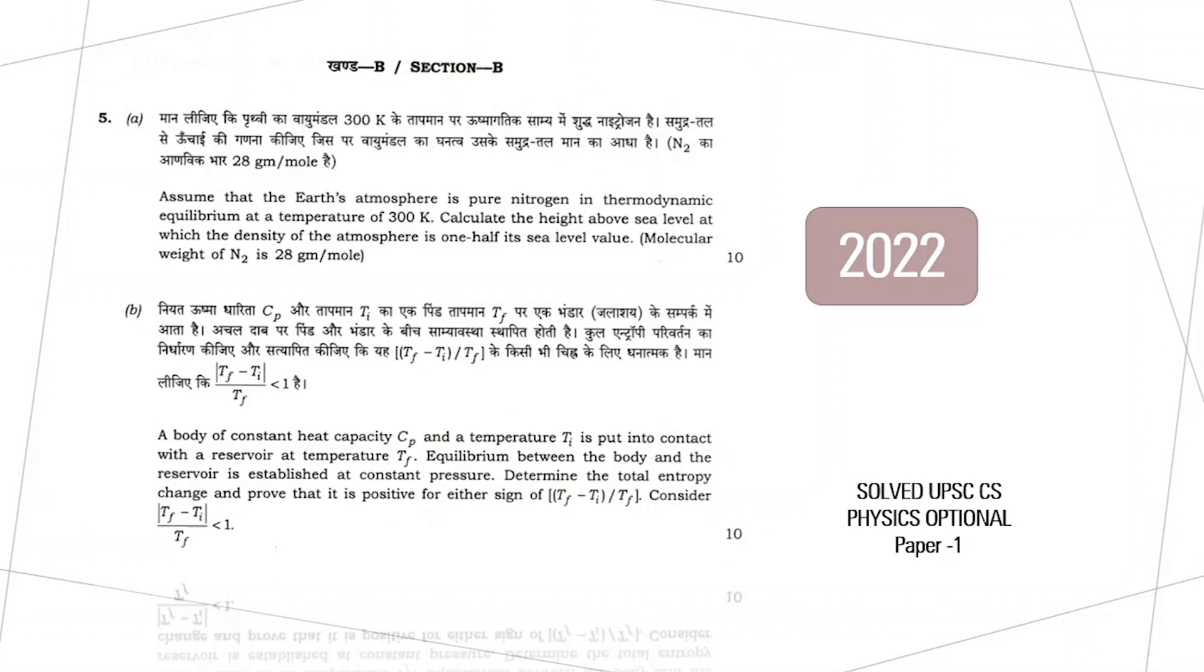Let's move to the next question. In this question we are given a body of constant heat capacity CP at temperature TI, put in contact with a reservoir at temperature TF. Equilibrium between the body and reservoir is established at constant pressure.